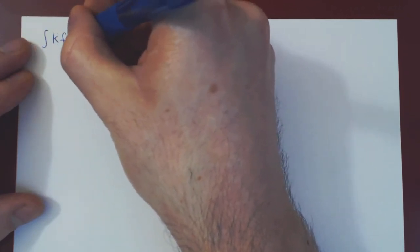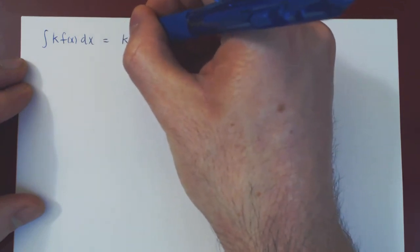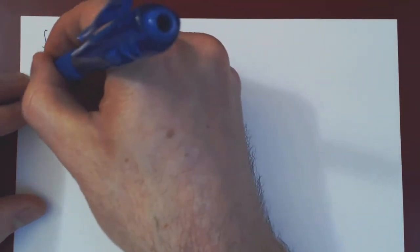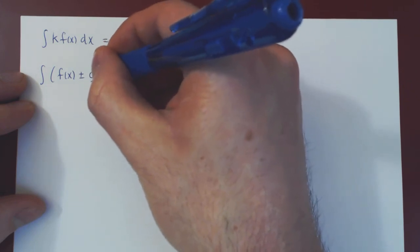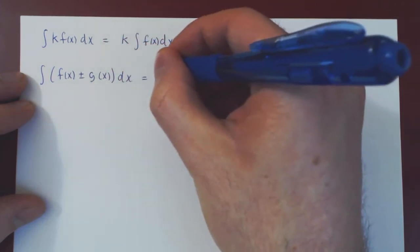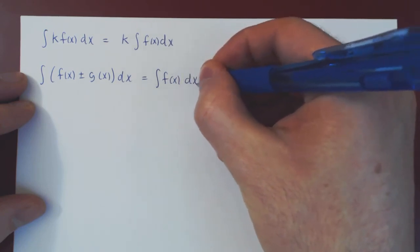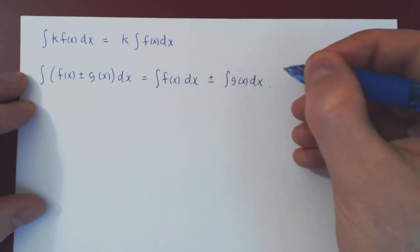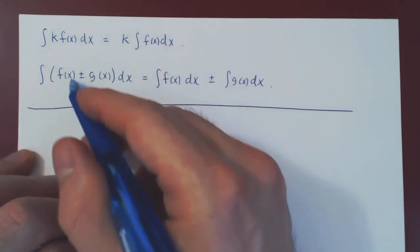Let's summarize by putting them together. These are very easy to remember because they are the same properties as the derivative in both cases: if you integrate a constant times f of x, you can pull the constant out of the integral; and if you integrate over a sum or difference of functions, you can integrate the functions individually, just as with the derivative.